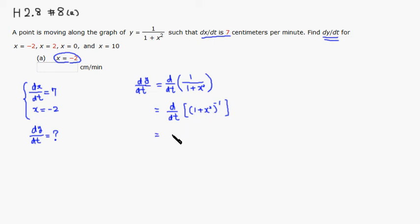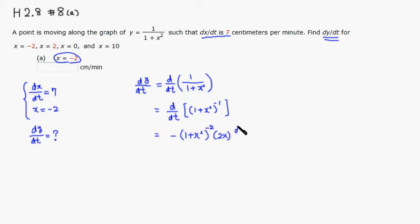Put the negative sign in front, keep the same quantity (1 + x²), and subtract one from the power, giving negative two power. Then multiply by the derivative of the inside, which is 2x. Since we're taking the derivative with respect to t, multiply by dx/dt.